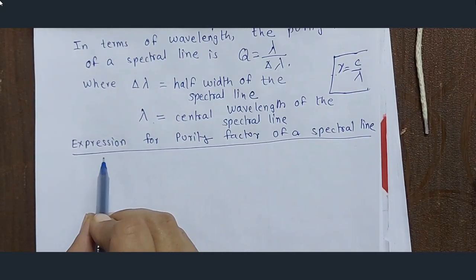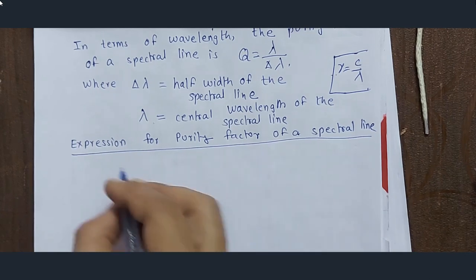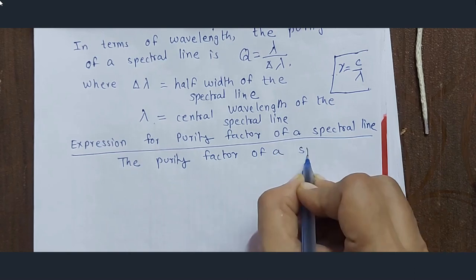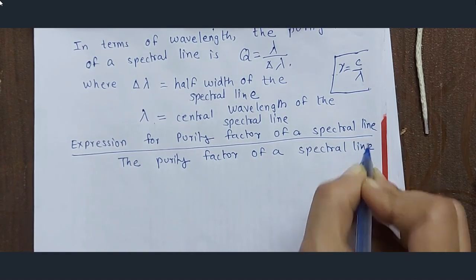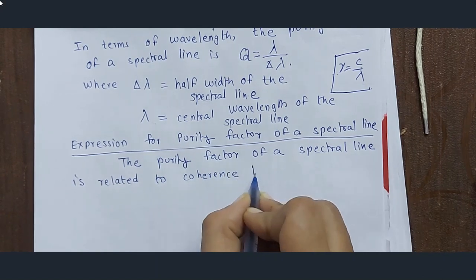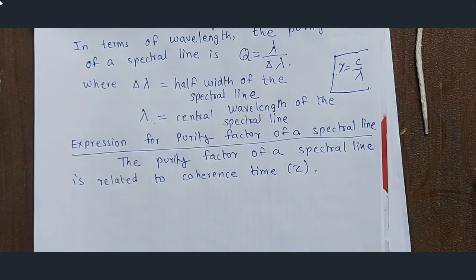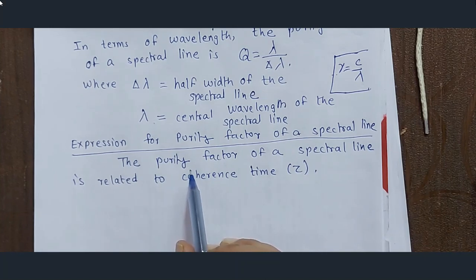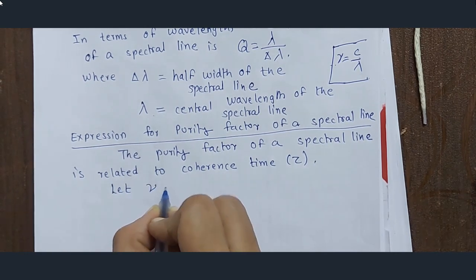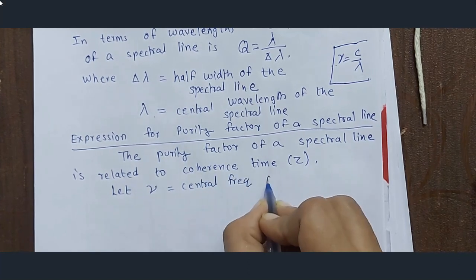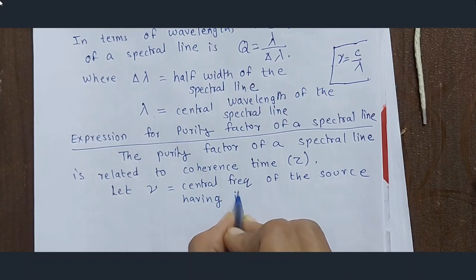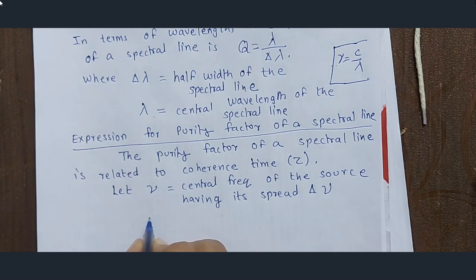Now we are going to see the expression for the purity factor of a spectral line — we will derive it. The purity factor of a spectral line is related to coherence time, as already discussed in the first video. We are going to see how the purity factor is related to the coherence time.